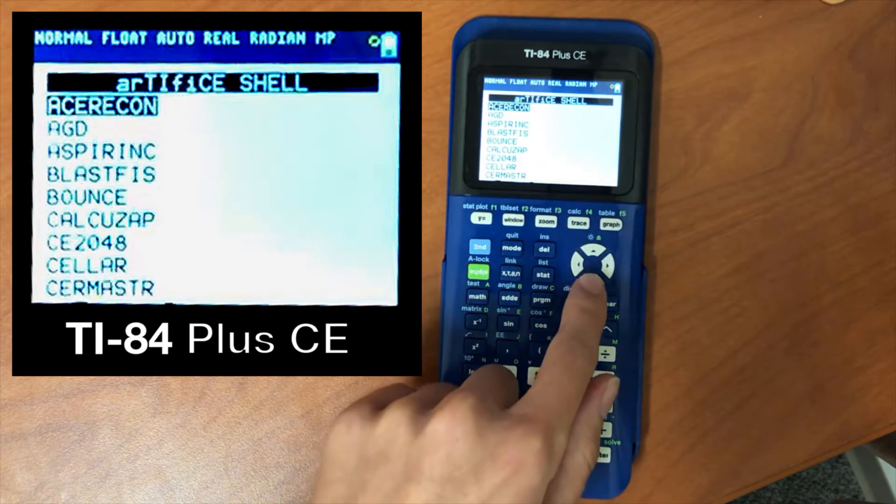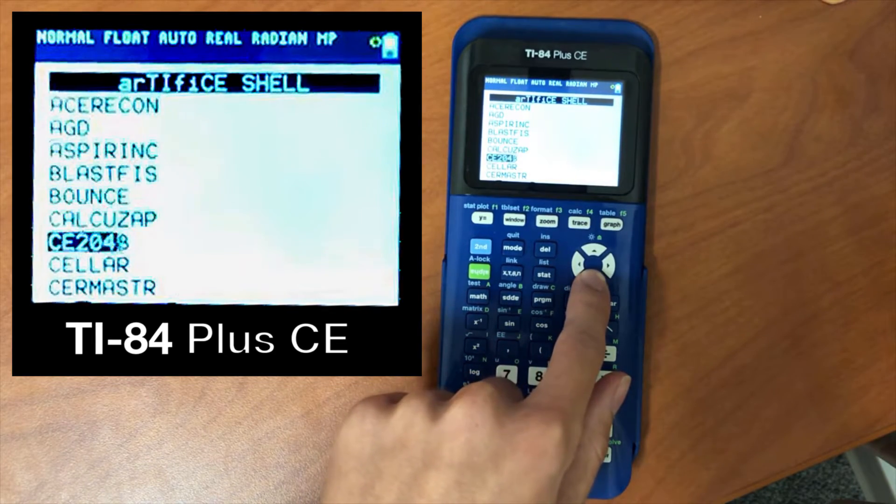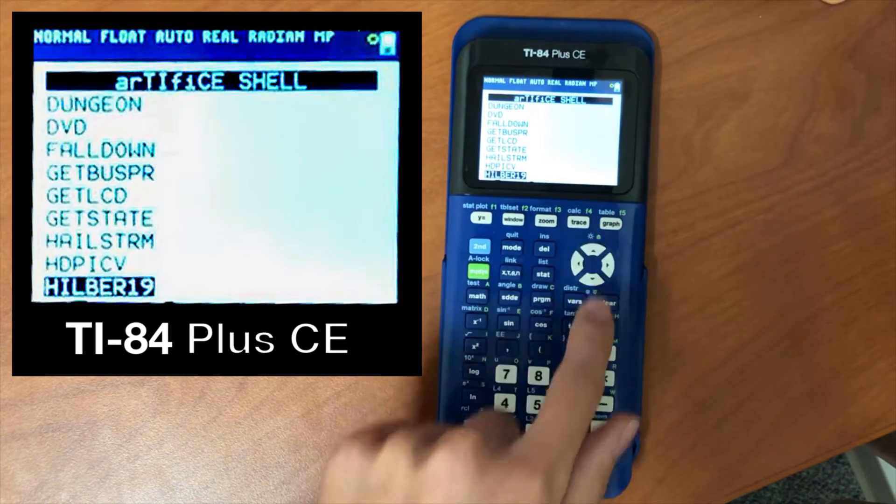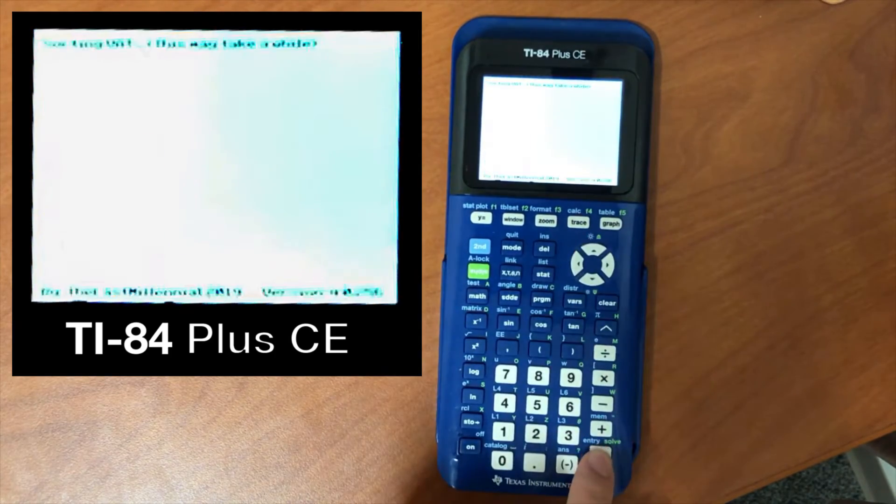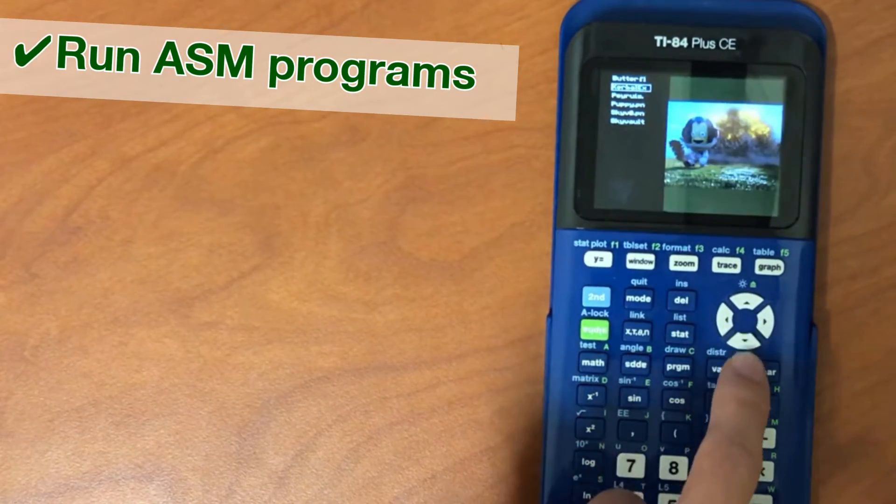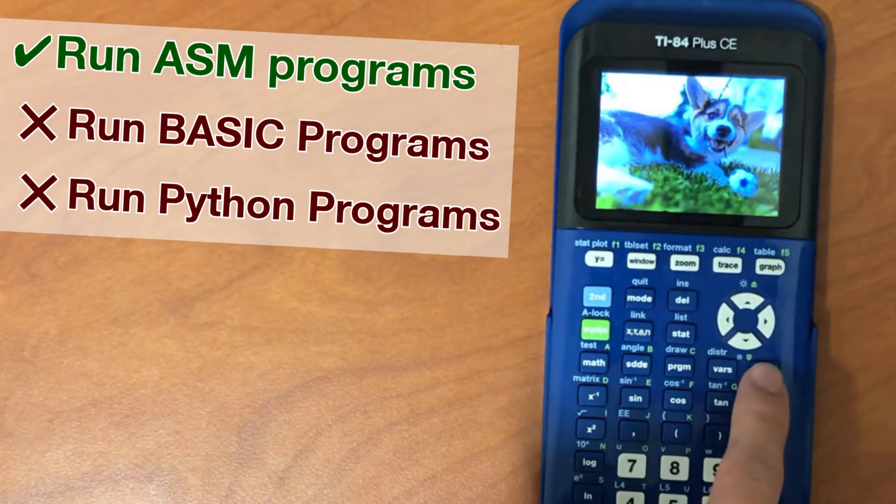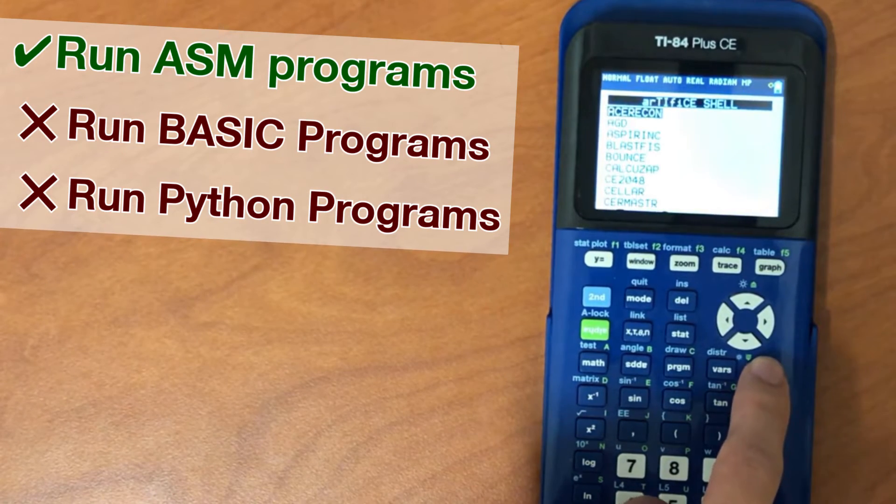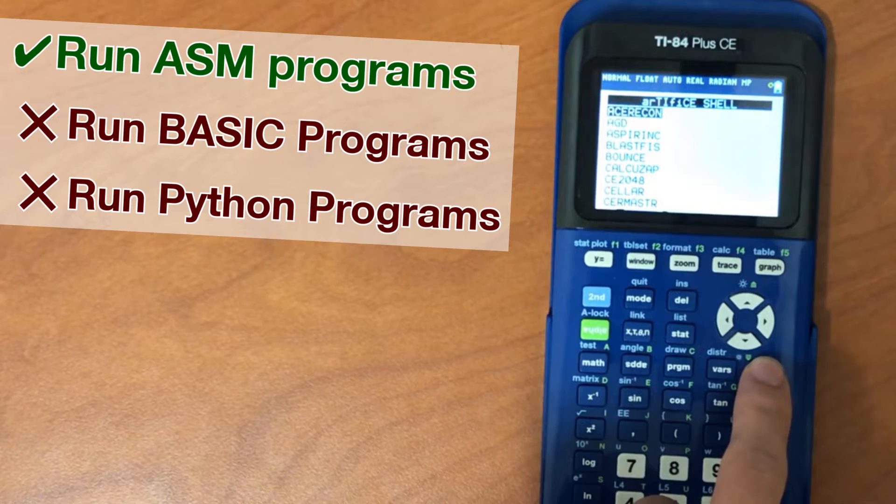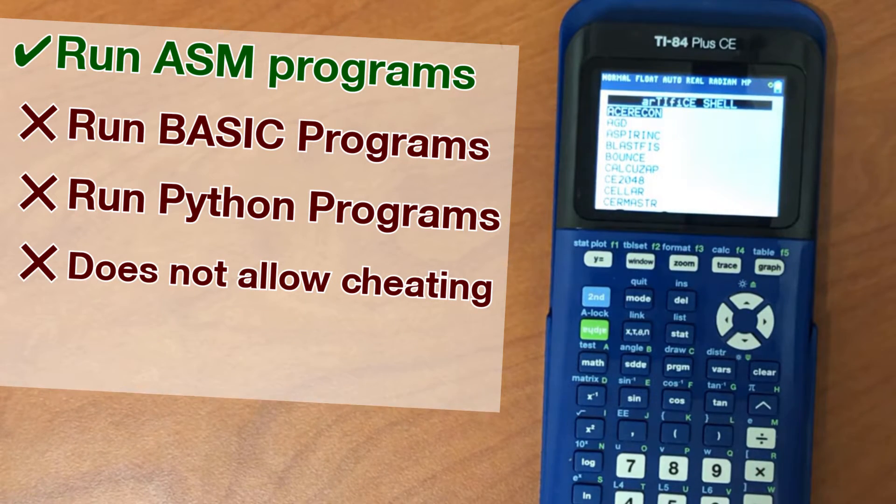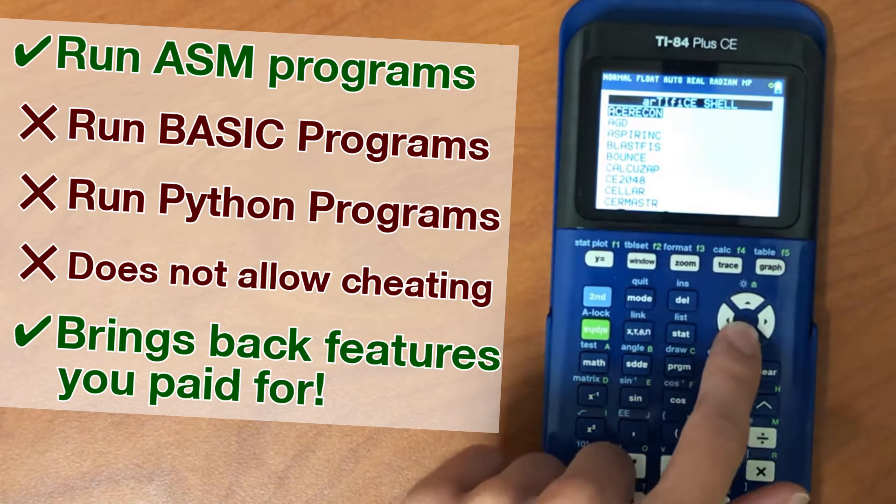Boom! You're now in the Artifice menu which will allow you to run any assembly program. There's a few things I need to clarify about what this menu can and can't do as of time of recording. It can run any assembly program you have installed. However, it cannot run TI Basic or Python programs you have installed since TI has not removed that functionality from the regular program menu. This tool does not allow cheating of any form. It only brings back functionality TI calculators had for dozens of years.